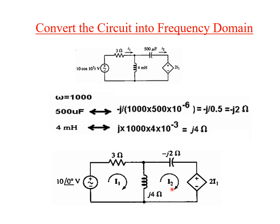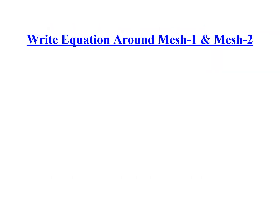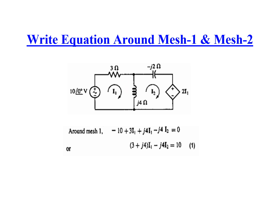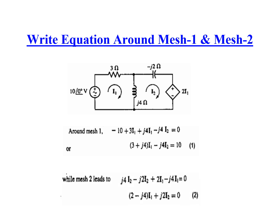We have two meshes: mesh with current I1 and mesh with current I2. Writing the equations around mesh one, starting from minus 10, we get 3*I1 and j4*I1 minus j4*I2. Instead of writing j4 bracket (I1 minus I2), you can write all terms related to I1 first, then terms related to I2 with a negative sign.